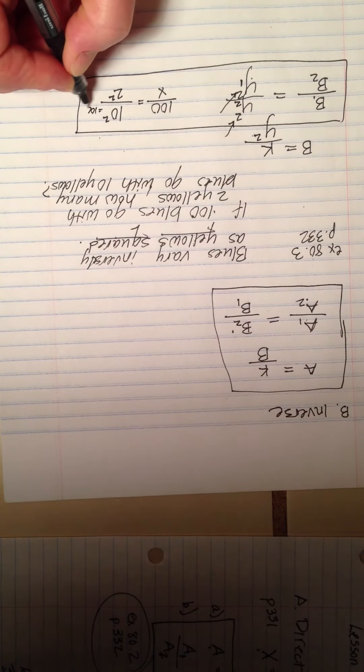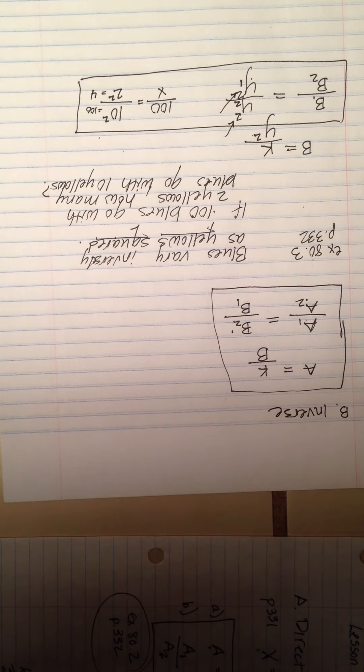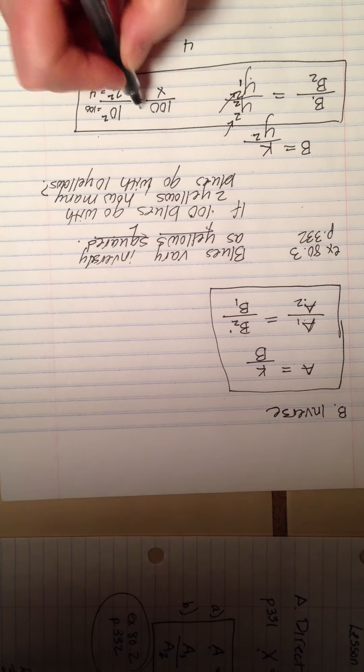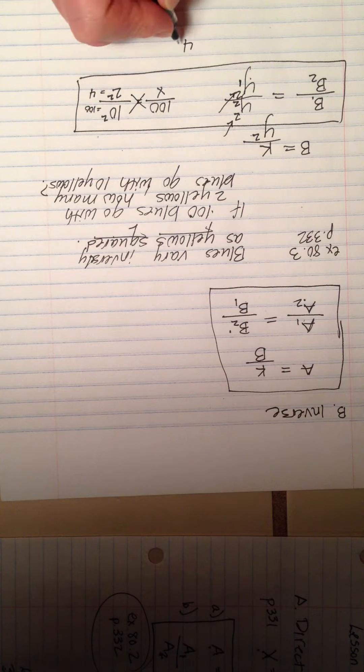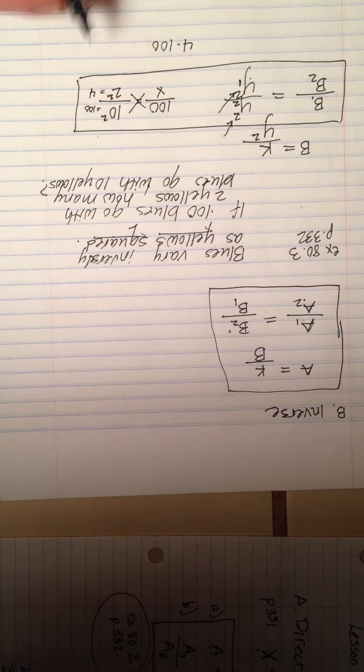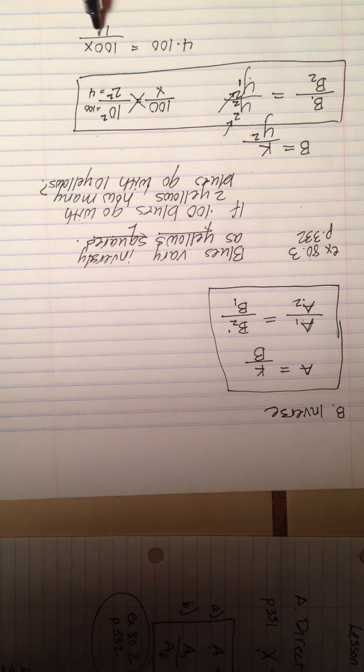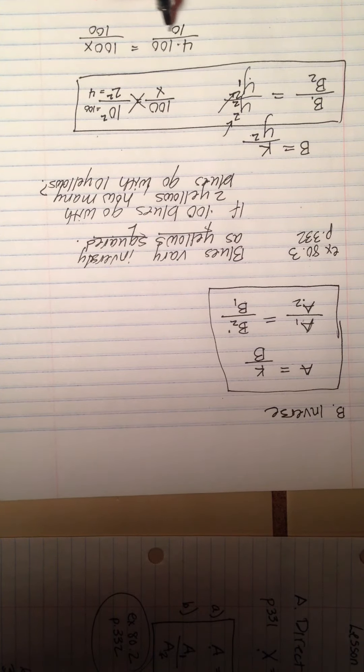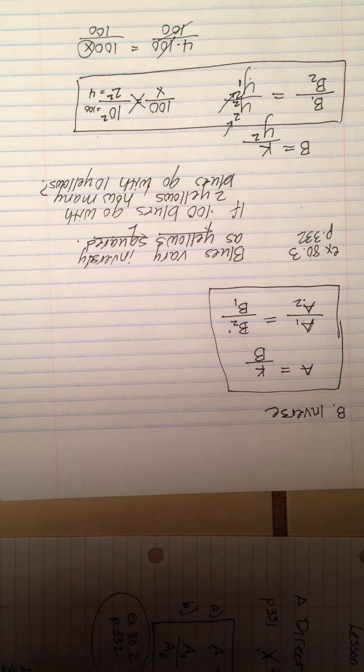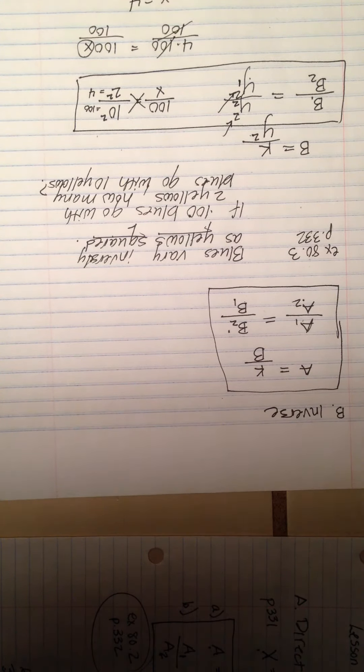Ten squared equals one hundred. Two squared equals four. So four, now I'm going to cross multiply. Four times one hundred equals one hundred x. Whoa, that's not going to be too hard, is it? Divide both sides by one hundred to isolate our x. Those cancel. X equals four.